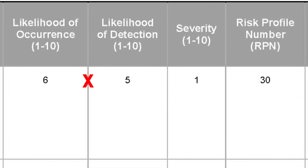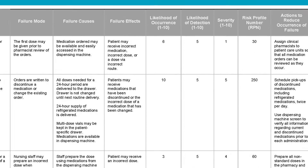By multiplying the scores — which range from 1 to 10 — that you put in each one of those categories, you get a risk priority number, which helps you identify which area you need to focus on in order to begin your work and improvement.